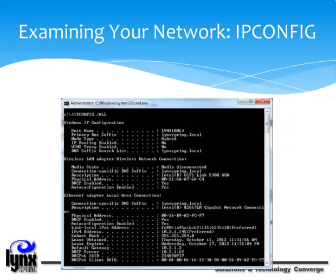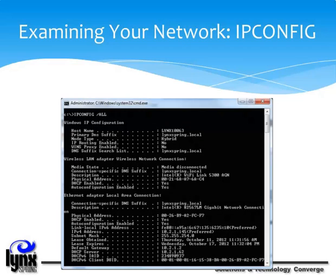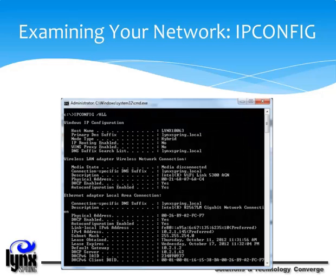If you type ipconfig /all, you're asking the system to give you an in-depth report with much more information. Here you can see the host name — the name of the computer on the network, in this case links10063. The primary DNS suffix shows the network the computer is on, which is linkspring.local. You can also see the wireless card manufacturer and model, whether or not you're using DHCP or have a static address — remember, in DHCP you might get a different IP address next time you log on — the subnet mask, how long you've been connected, and much more.